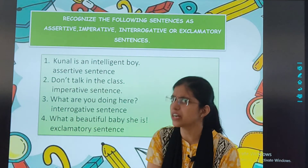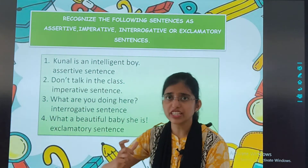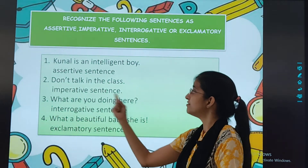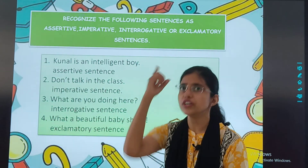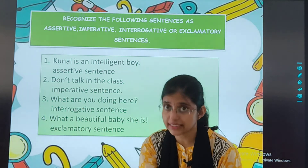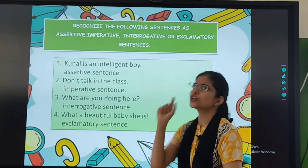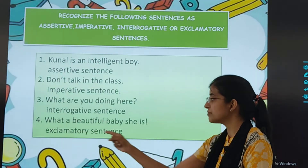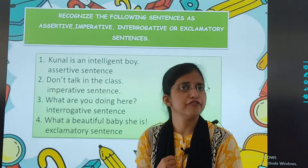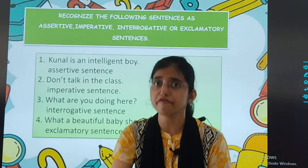Let's revise them again very fast. Assertive sentence — we state something. Imperative sentence — command, order, or request. Interrogative sentence — ends with a question mark. Exclamatory sentence — ends with an exclamatory mark, in which we express our sudden feelings.